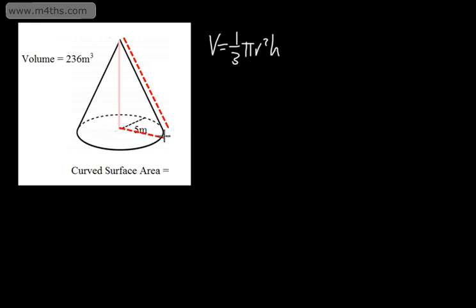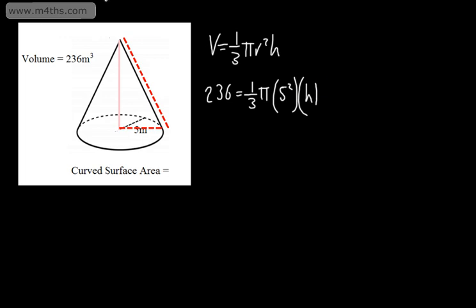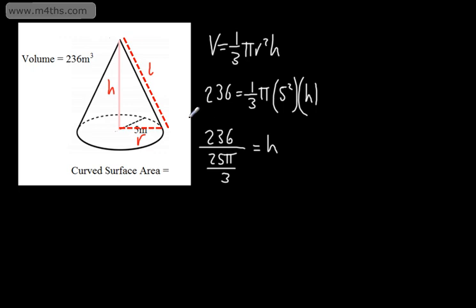Remember, the radius can be placed anywhere on the base. So 236 equals one third pi, then the radius squared — the radius is 5, so 5 squared — multiplied by the height. If I want the value of h, I take 236 divided by 25 pi over 3. That then gives me the height.